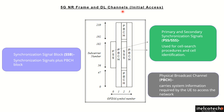In the previous lecture we learned about the different downlink channels which are important for initial access — the primary synchronization signal, secondary synchronization signal, and the broadcast channel. These different signals and channels make up the synchronization signal block, and their place and allocation is fixed within the frame, as we have seen in the previous slide.